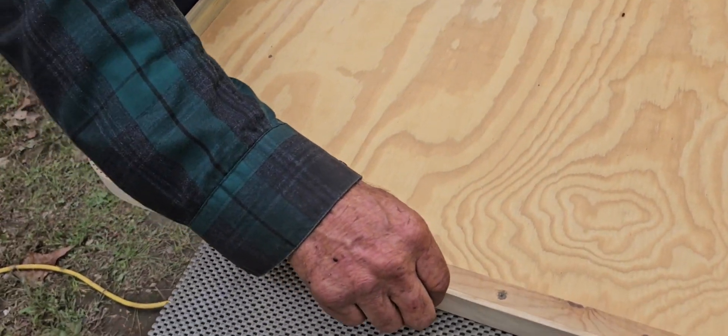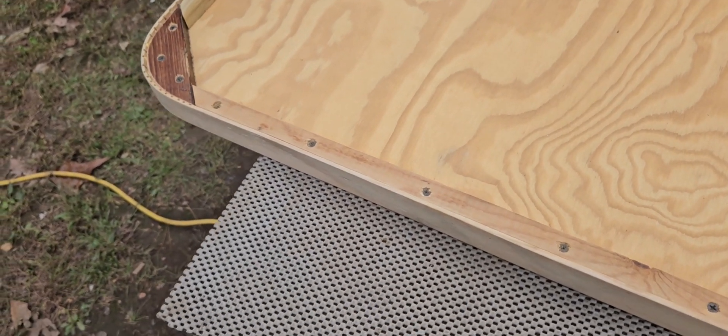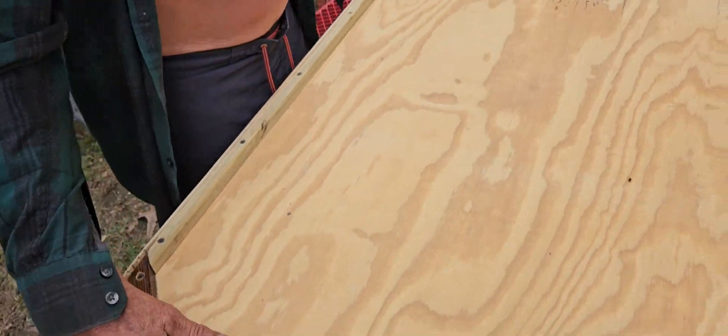And you always leave a little bit of a lip when you do put your edging piece on because that way, it's going to have a little bit of a drip edge because this is going to be for outdoor use too.